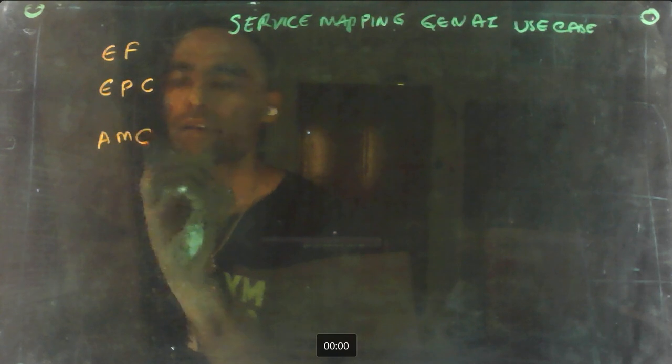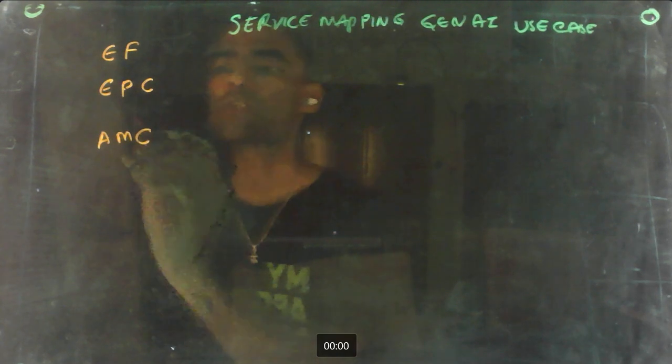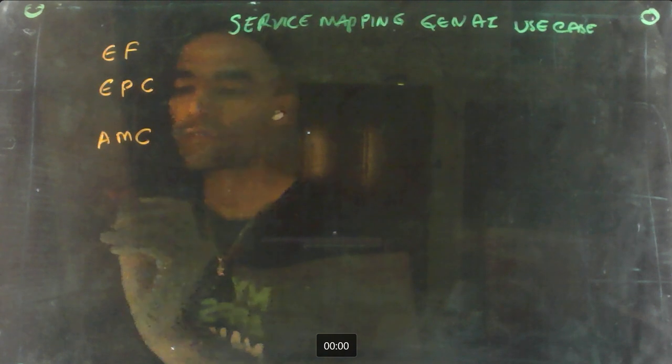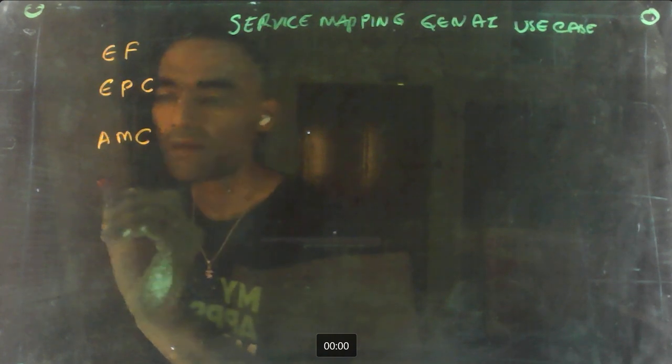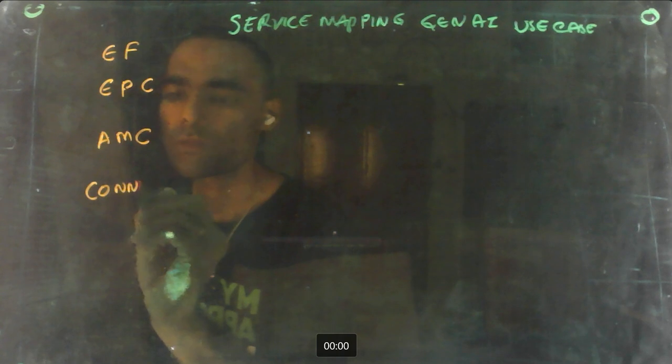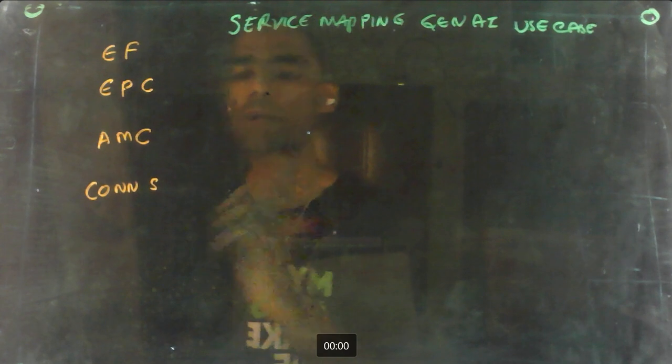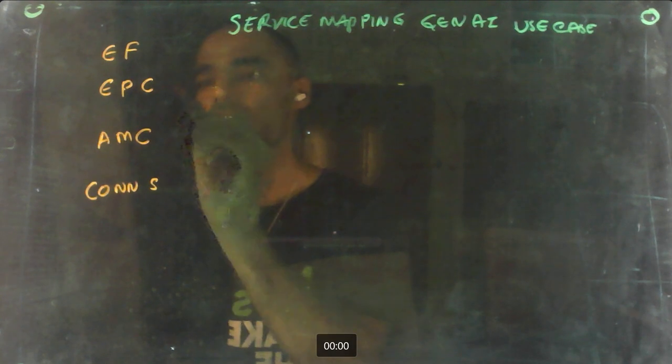Then you have something called connection suggestions. This will tell us how to add new connections to an existing map. Now with this method you can create new maps.